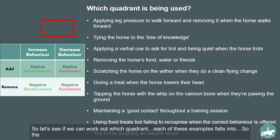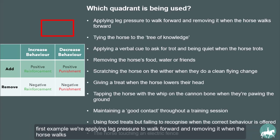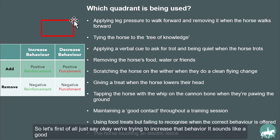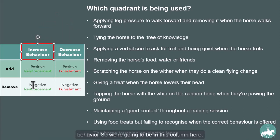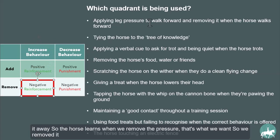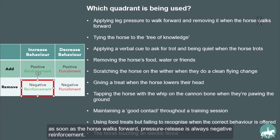Let's work out which quadrant each example falls into. First: applying leg pressure to walk forward and removing it when the horse walks forward. This is probably reinforcement — we're trying to increase that behavior. We apply leg pressure and then remove it, so we're using negative reinforcement because we're taking the pressure away. The horse learns that when we remove the pressure, that's what we wanted. Pressure release is always negative reinforcement.